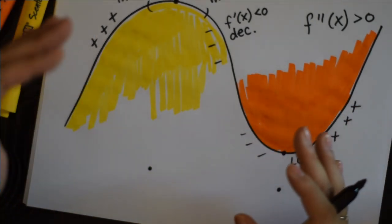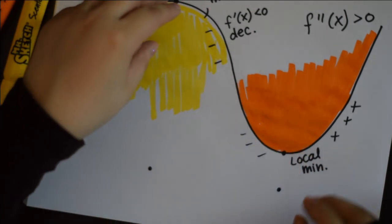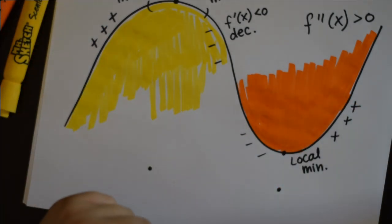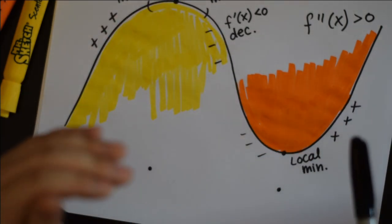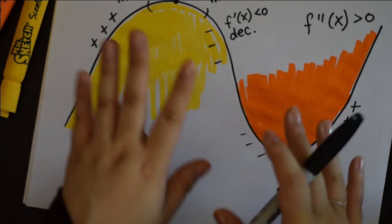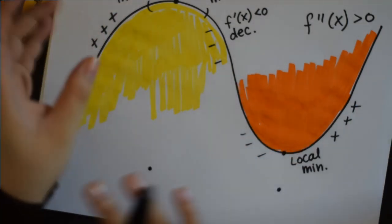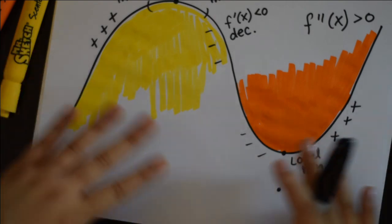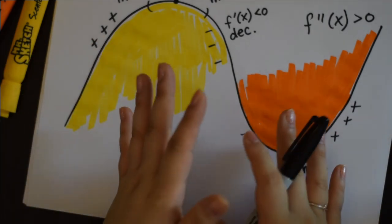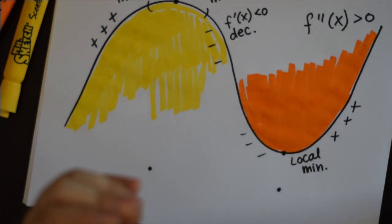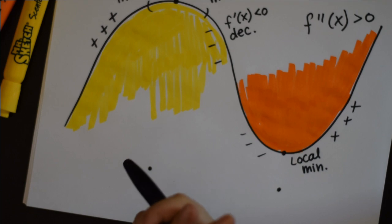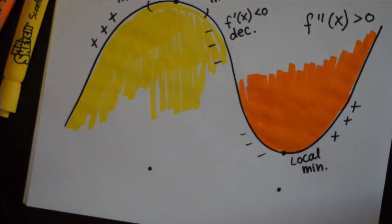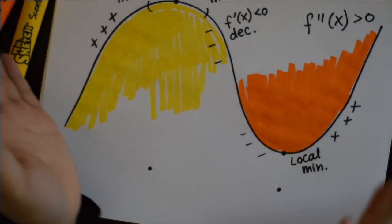We know that if we have a turning point, it's going to happen at the critical points. But if we have critical points, they might not be a local maximum or minimum. So when analyzing a graph, finding critical points first — by setting f'(x) equal to zero or undefined and solving for x — is a really good place to start. It's just another tool for sketching graphs of equations that we might not even recognize or know.